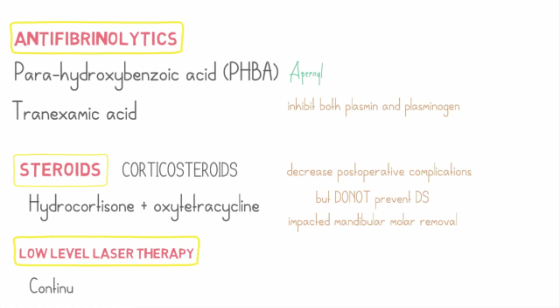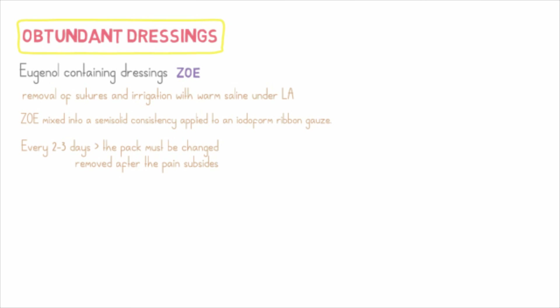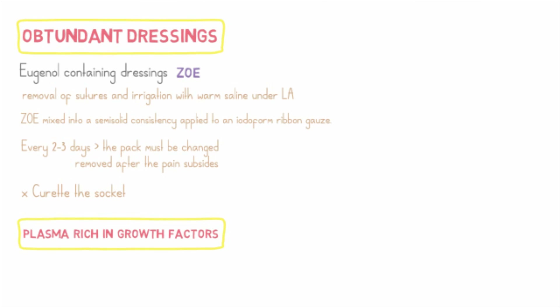More recently, low-level laser therapy using a continuous wave diode laser has been shown to increase oxygen supply, cause vasodilatation, improve wound healing, and reduce pain and inflammation at an extraction site. Obtundent dressings, more routinely used in clinical practice, are cost-effective and easily available. Steps include: remove any sutures if present, followed by copious irrigation with saline and betadine under LA if required; mix zinc oxide eugenol to a semi-solid consistency and apply to an iodoform ribbon gauze; recall the patient and replace every two to three days until pain subsides. Be cautious of the irritant local effect of eugenol and its interference with wound healing.